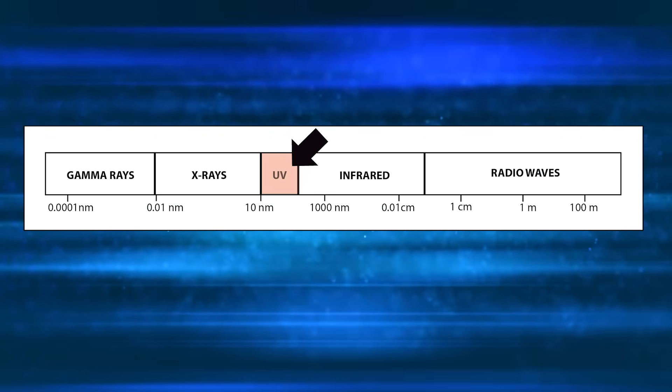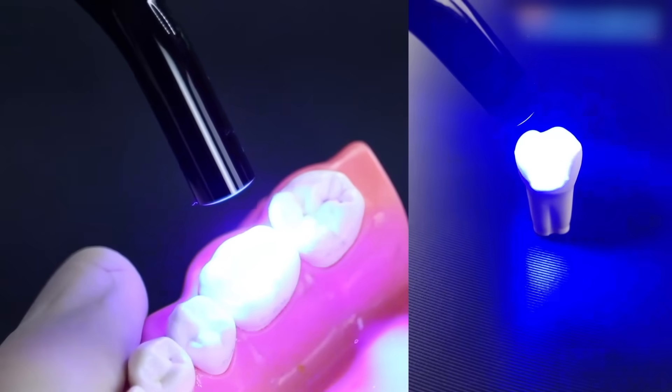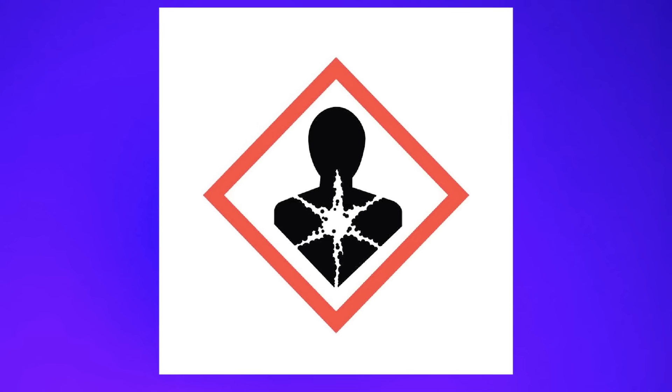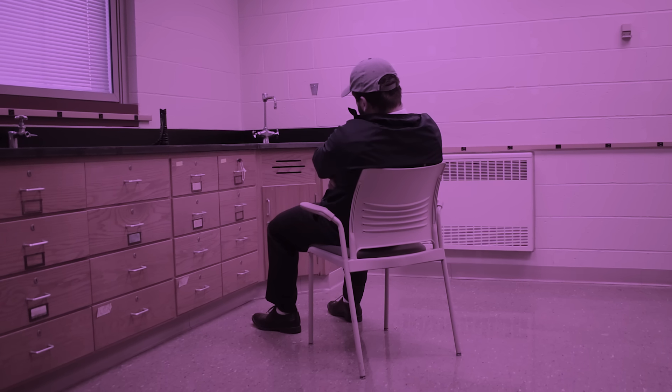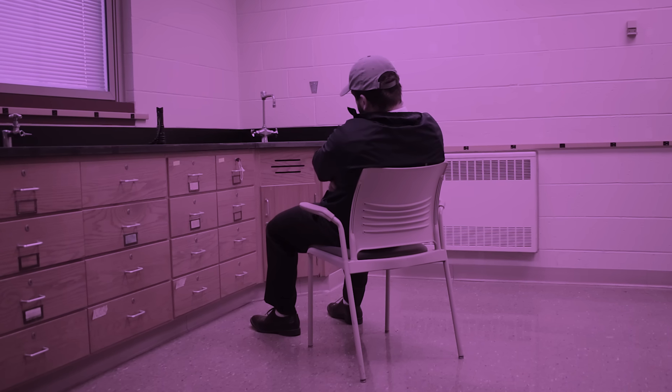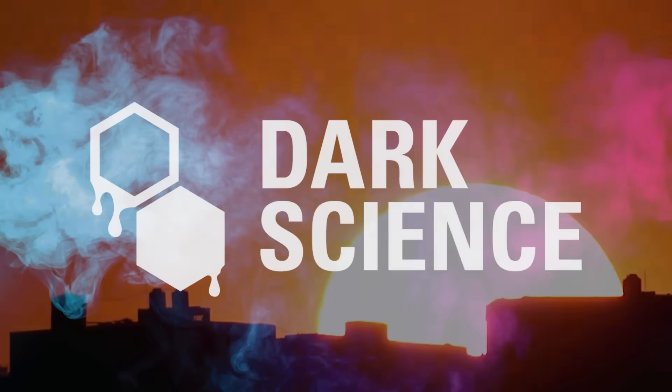UV light is a useful tool that provides many benefits such as sterilization, scanning for body fluids at crime scenes, and hardening adhesives. It can also be very hazardous to your health if precautions are not taken. You don't have to sleep under a sterilizing lamp to be exposed to UV radiation. It's all around us from sunrise to sunset, so make sure you're protected. Thanks for watching, dark science.